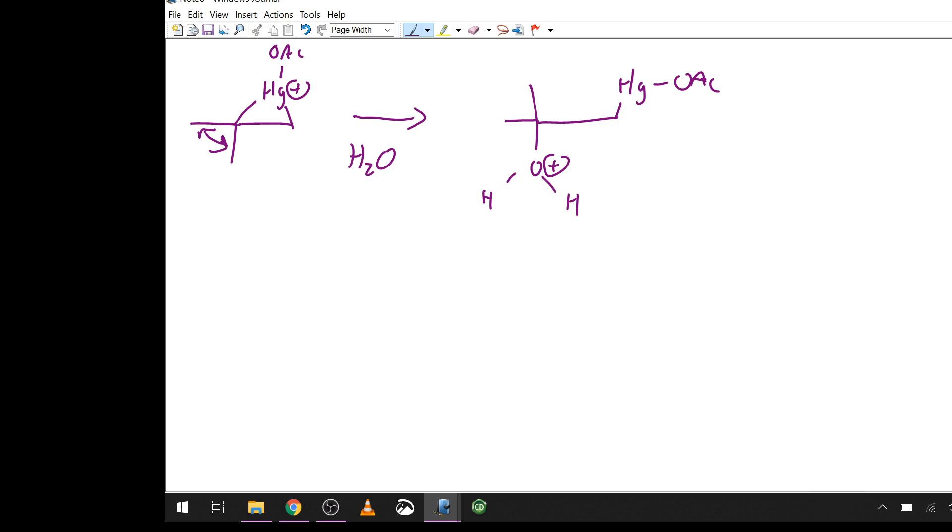We do end up seeing anti-stereochemistry. So we're not looking at stereochemistry yet. We will in a moment. But we do end up seeing the approach of the incoming water group, which ends up as an alcohol, opposite to where the mercury was. So it basically implies something very similar to that three-membered ring opening. So how that happens is questionable.